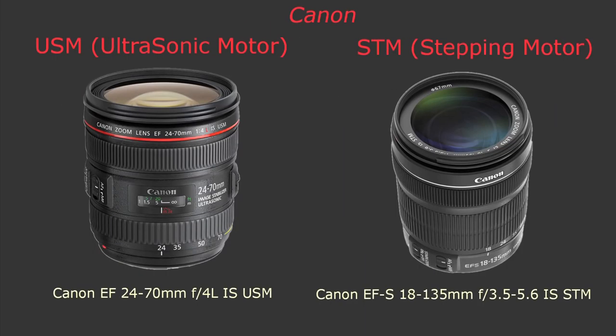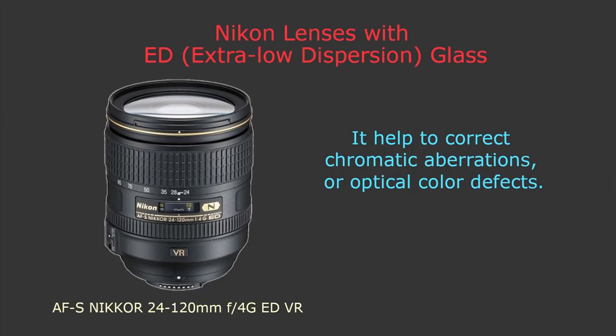Now let's talk about Canon focusing systems. Some Canon lenses have USM which stands for ultrasonic motor, allowing faster and quieter focusing. Other lenses have STM which stands for stepping motor — applied to a new range of lenses designed to eliminate noise during video recording, so the autofocus is quiet enough that the audio will not pick up the focusing noise.